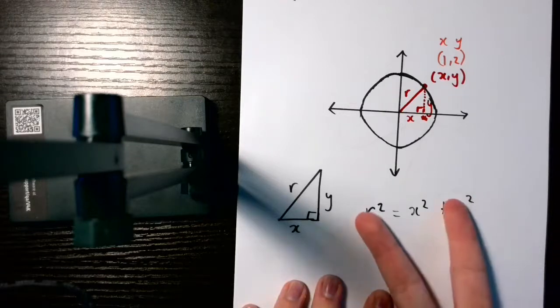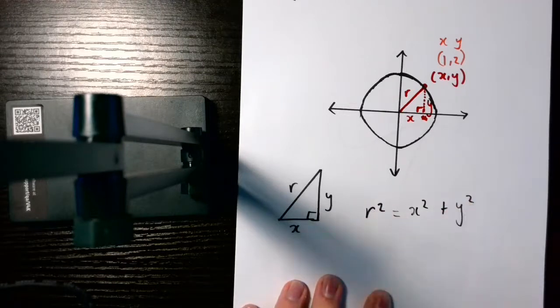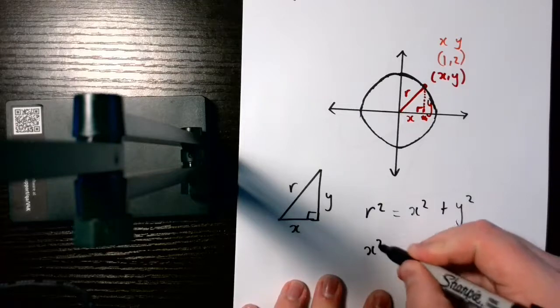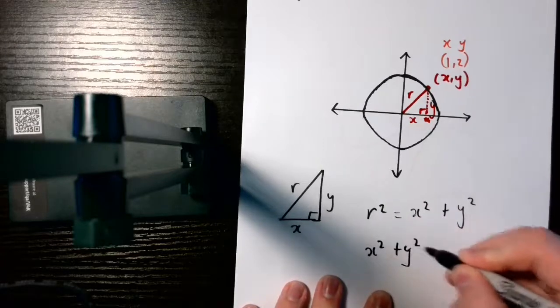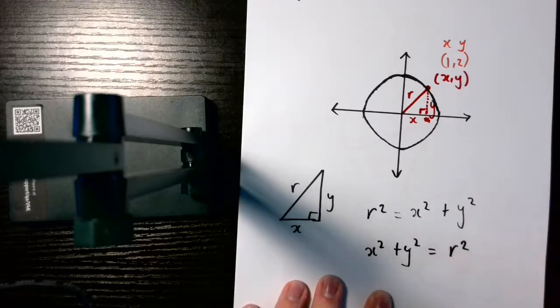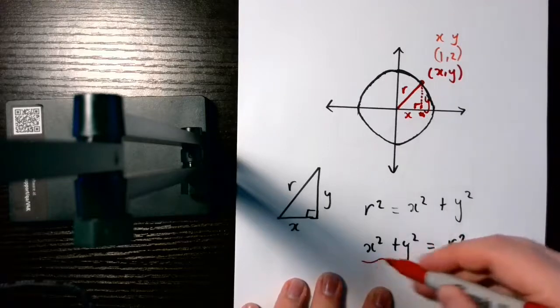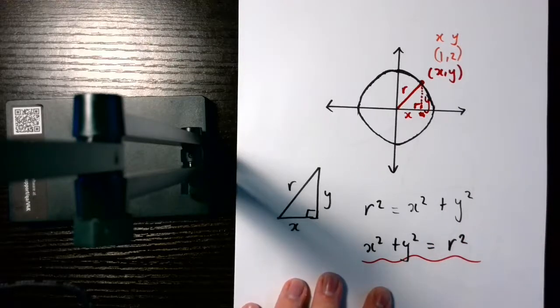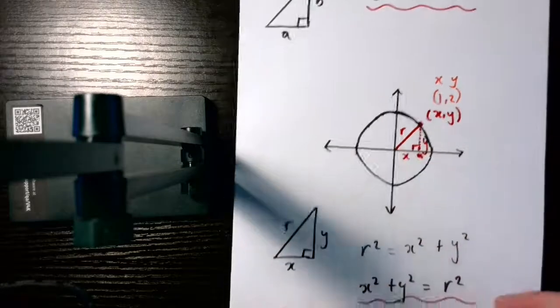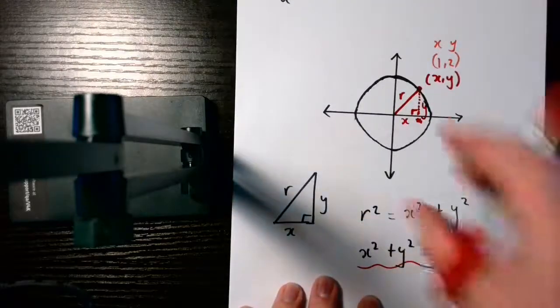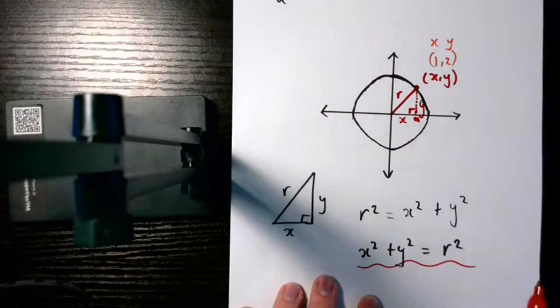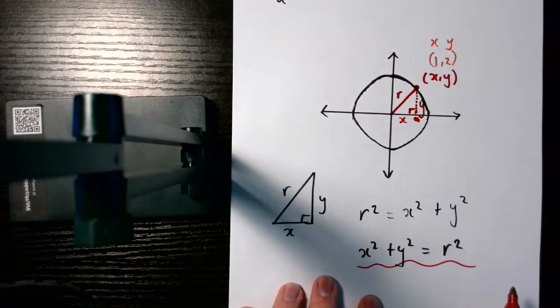Now, you'll notice, if I flip the sides of the equal sign around, I end up with x squared plus y squared is equal to r squared. Which is the equation of our circle. For any circle where it's centred at the origin. There is another way for me to show you if it's moved off of the origin, but we won't be covering that in this series of videos.